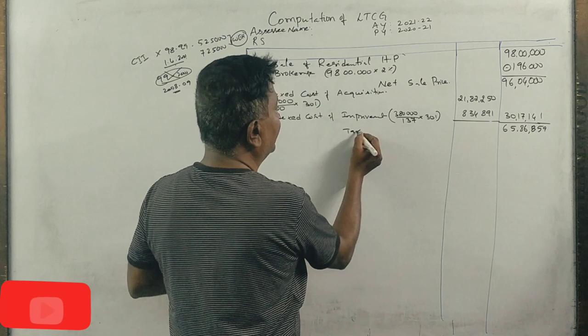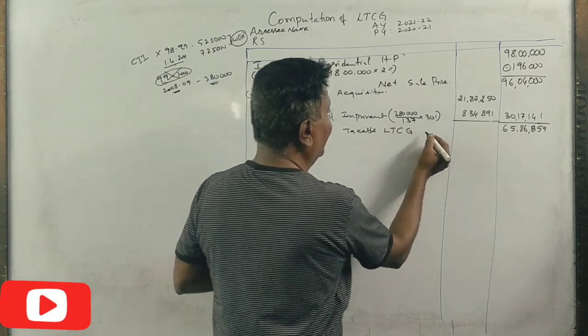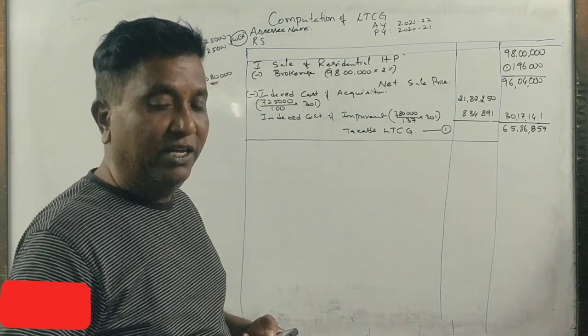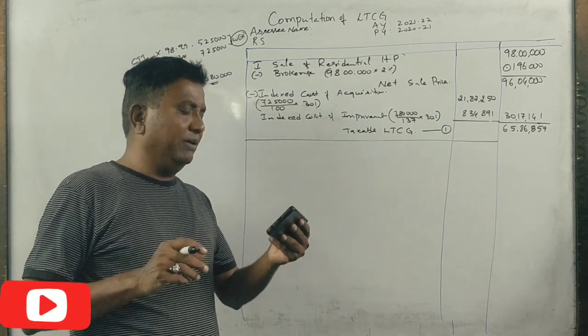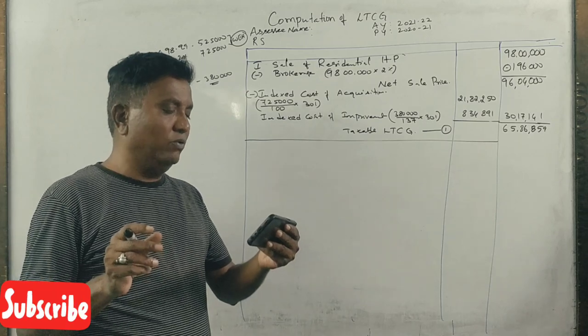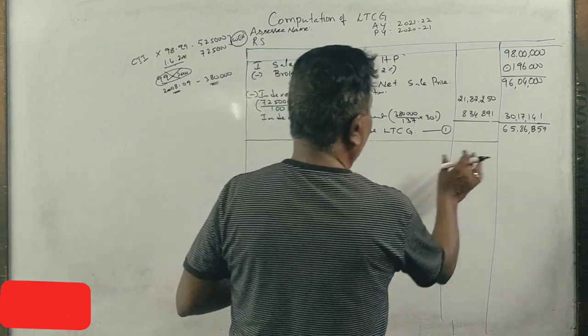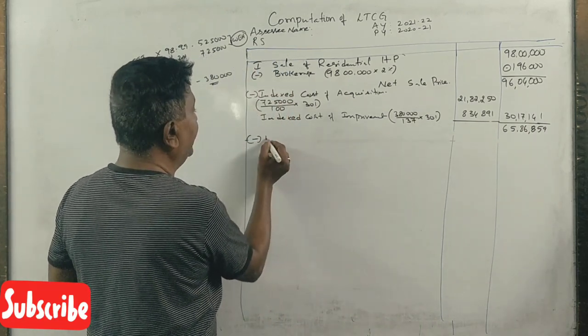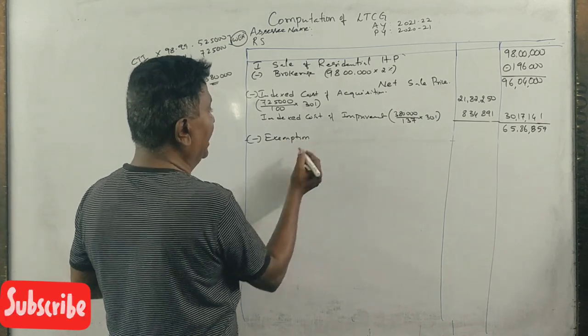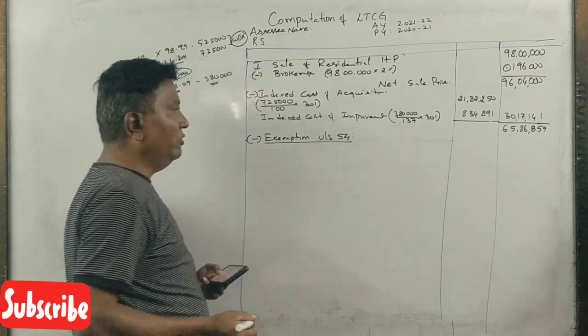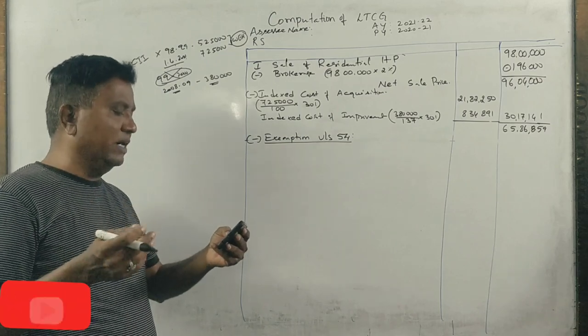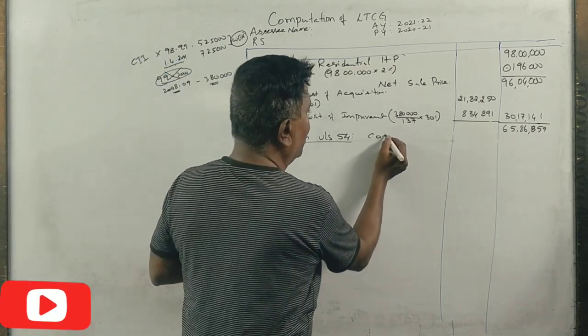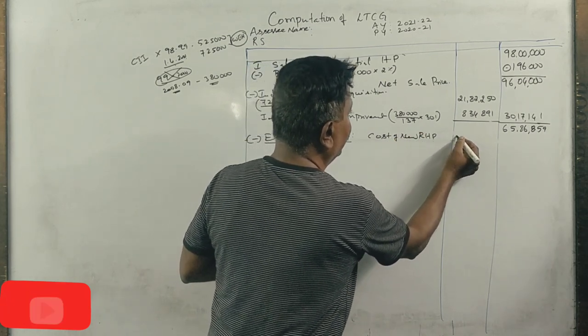This is long-term capital gain. Now there is an exemption under Section 54. If you sell a residential house and purchase a new one within two years, you can claim exemption. Cost of new residential house property is Rs 35 lakh.